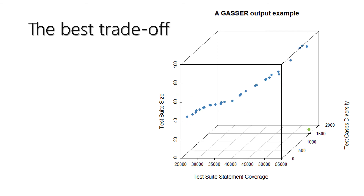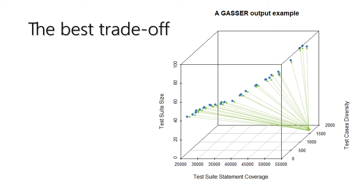To select the better trade-off among the three objectives, we adopt a criterion based on the compromise programming method. Our ideal point corresponds to the point with the maximum coverage and diversity and the minimum size. We compute the Euclidean distance between the ideal point and each solution that is a point in the Pareto front. The solution closest to the ideal point is selected as the one that achieves the best trade-off among the objectives.